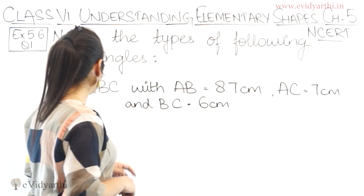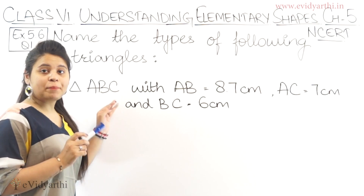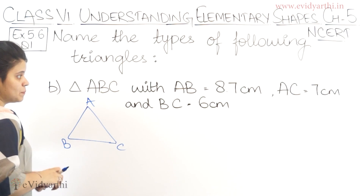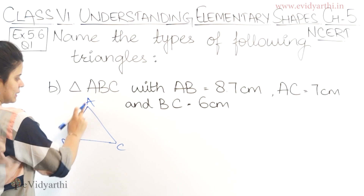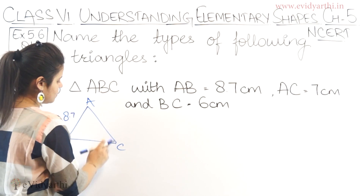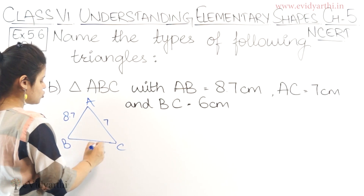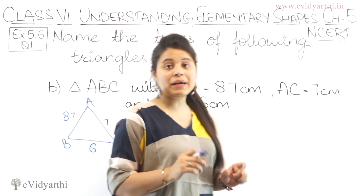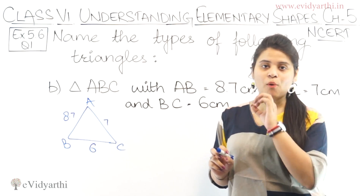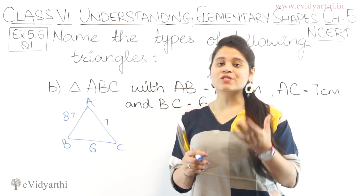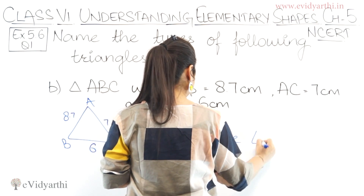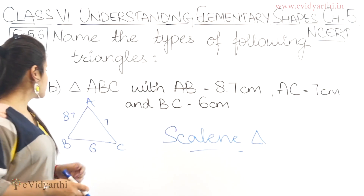Coming to part B, we have triangle ABC where AB = 8.7 cm, AC = 7 cm, and BC = 6 cm. We can see that all 3 sides are different — 6, 7, and 8.7. So again this is a scalene triangle because all the sides are different.